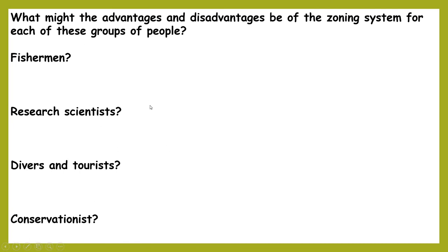Let's break this down further. What are the advantages and disadvantages of the zoning system for each group of people? If you're a fisherman, you're allowed to fish in some areas but nowhere near the range you would have had before — what does that mean for your income and supporting your family? Research scientists have some completely protected areas only for scientific research, but those areas are really tiny. Divers and tourists can still pretty much dive most of the reef. And a conservationist trying to conserve the ecosystem — what are your views on this plan?